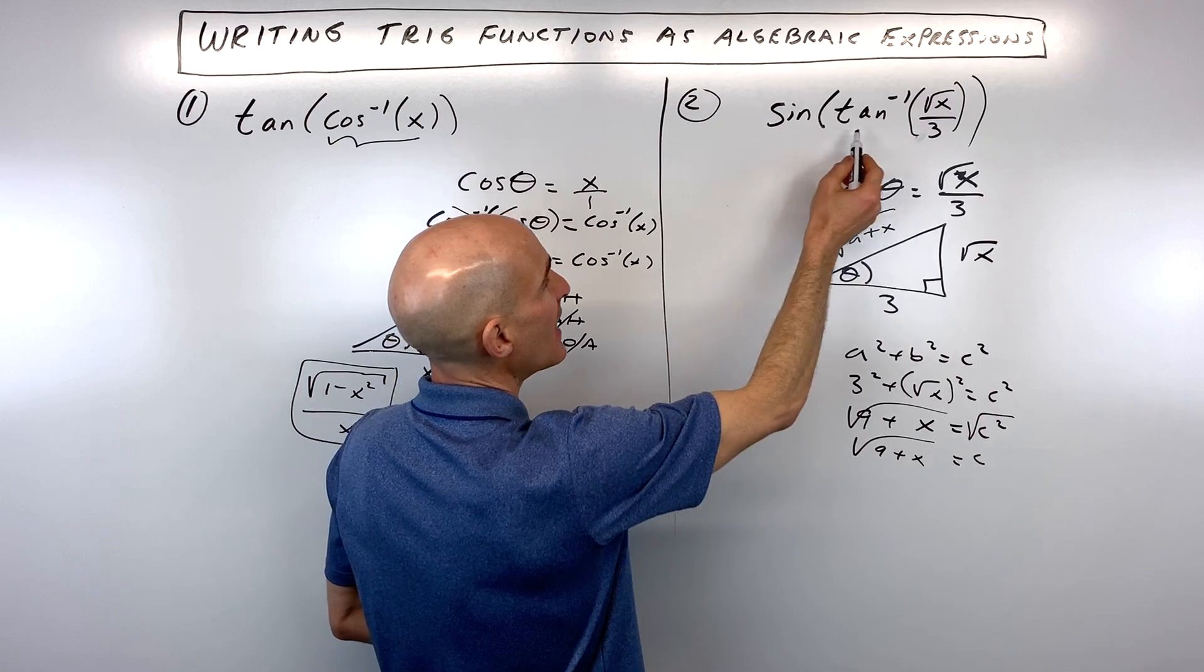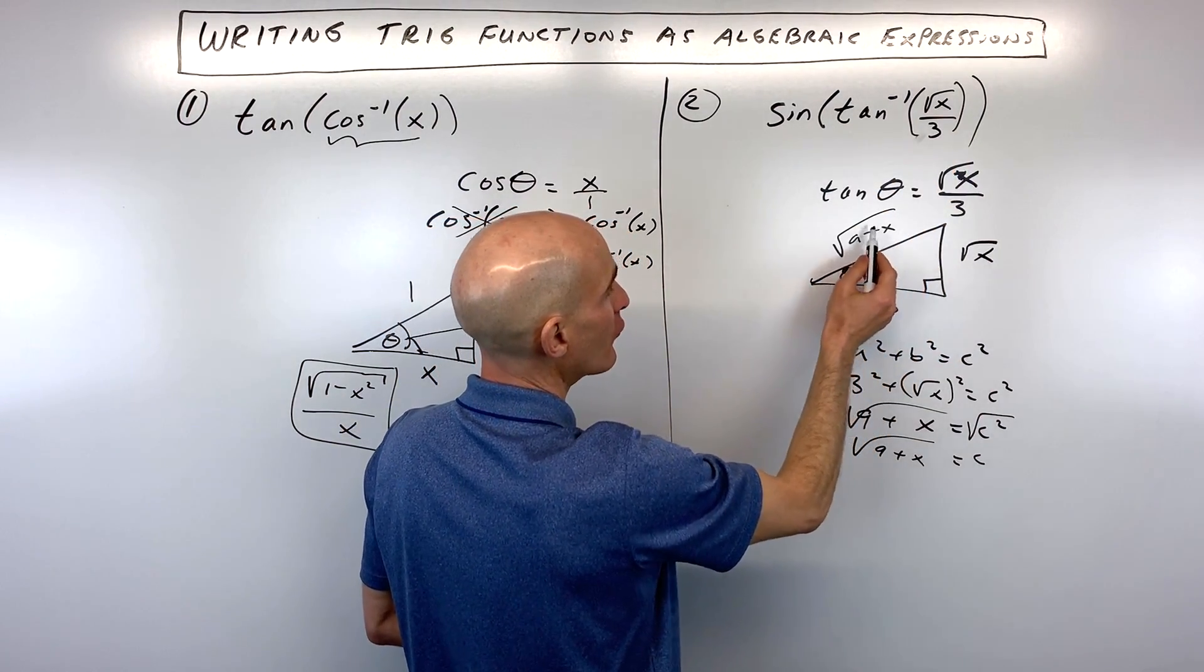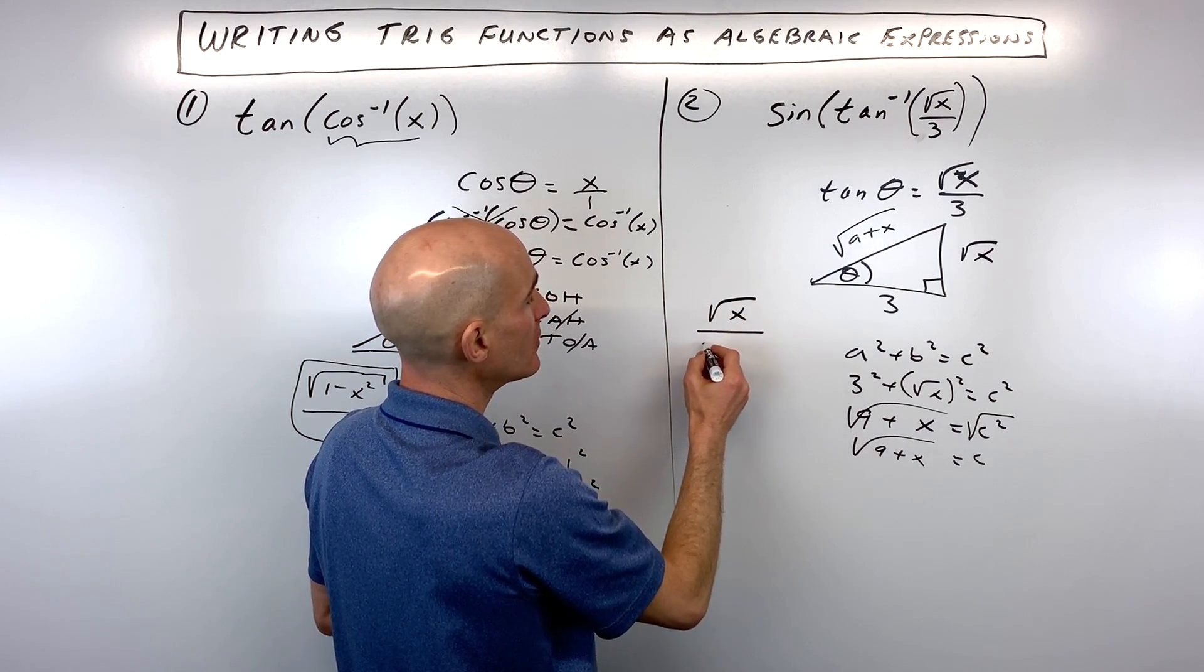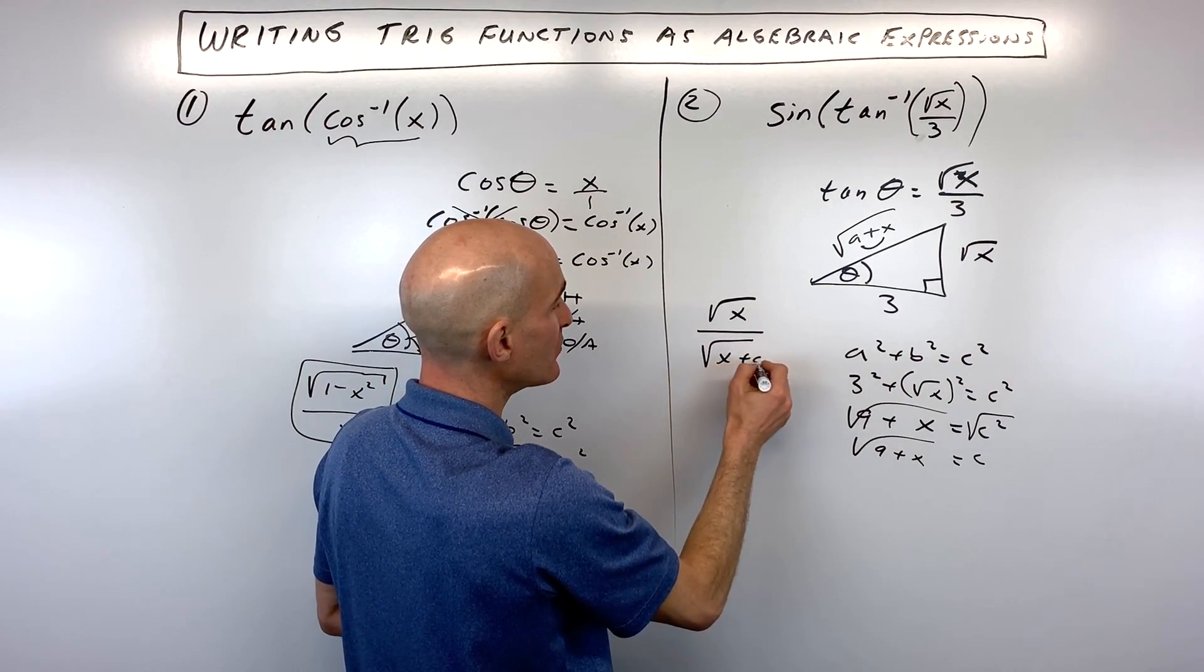But we want to find out what's the sine of this angle. Well, sine is opposite over hypotenuse. So we have square root of x over square root of, I'm just going to interchange these because addition is commutative, x plus nine.